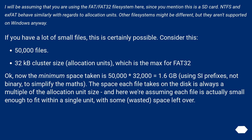The minimum space taken is 50,000 times 32,000 equals 1.6 GB, using SI prefixes, not binary, to simplify the maths. The space each file takes on the disk is always a multiple of the allocation unit size, and here we're assuming each file is actually small enough to fit within a single unit, with some wasted space left over.